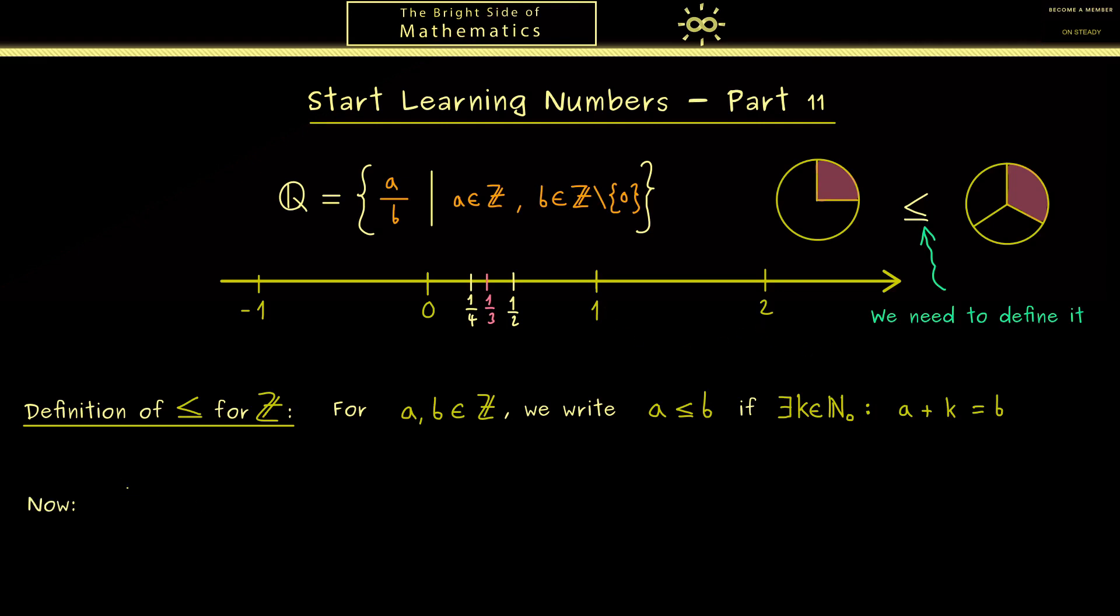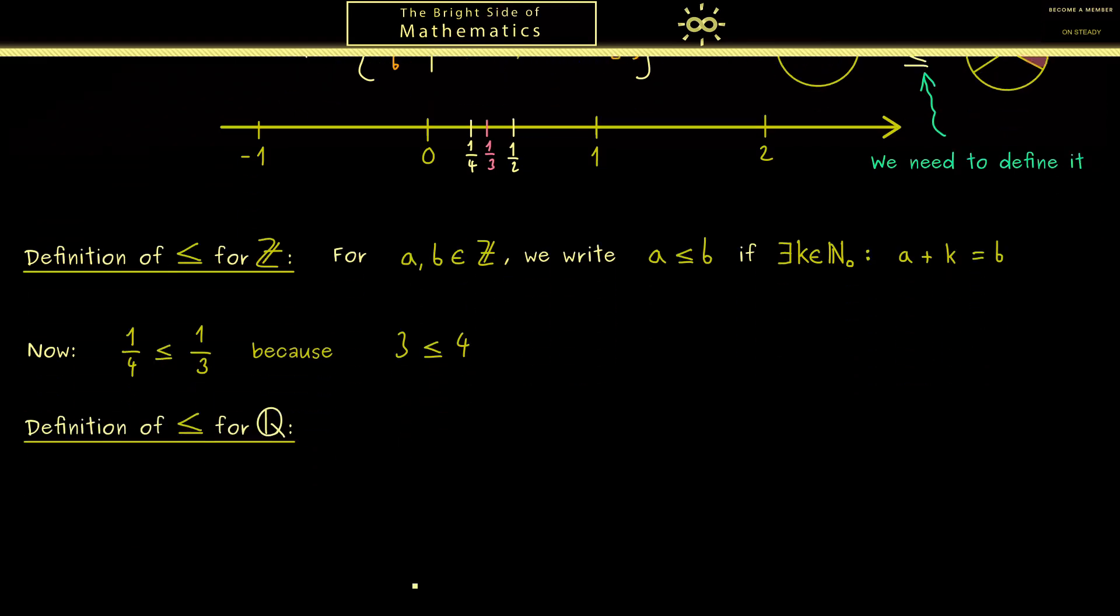Now we can use this to define that one quarter is indeed less or equal than one third. This should hold because 3 is less or equal than 4. Please note here we have the ordering for the integers, and here we have the new ordering for rational numbers. And this idea we now can put into a general definition.